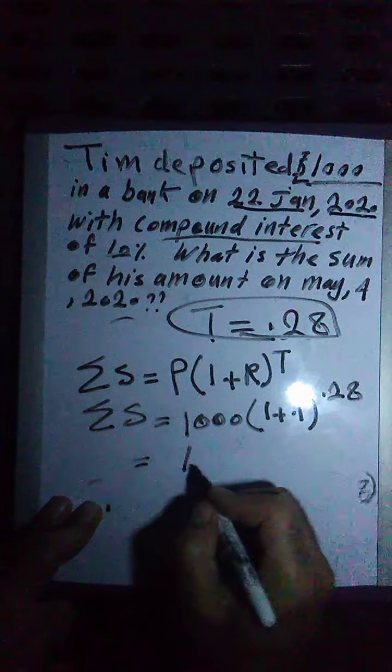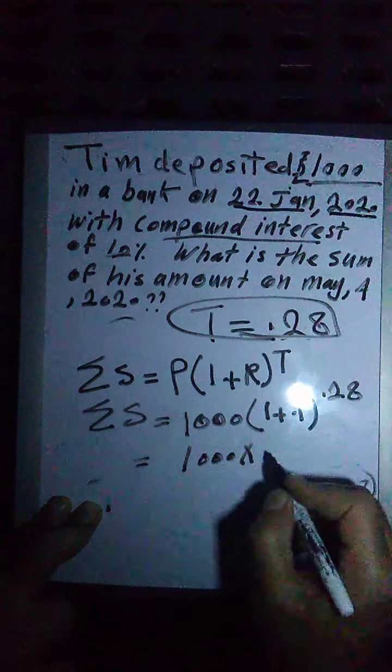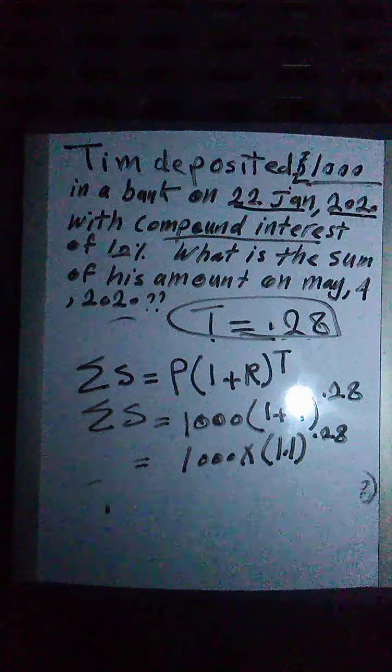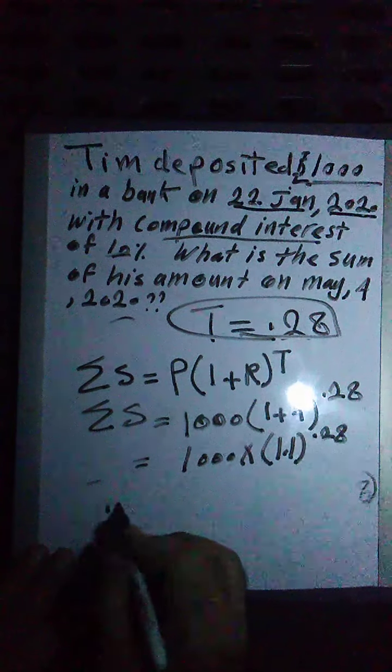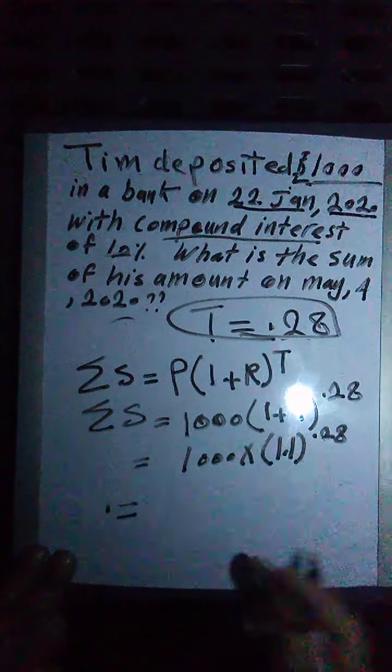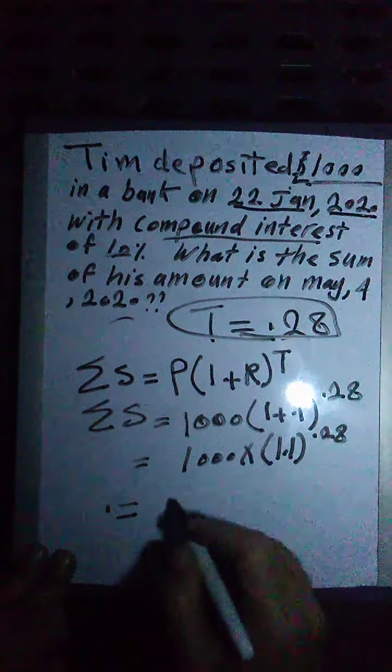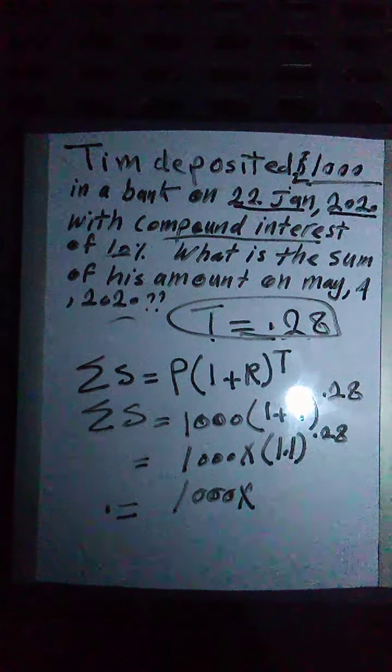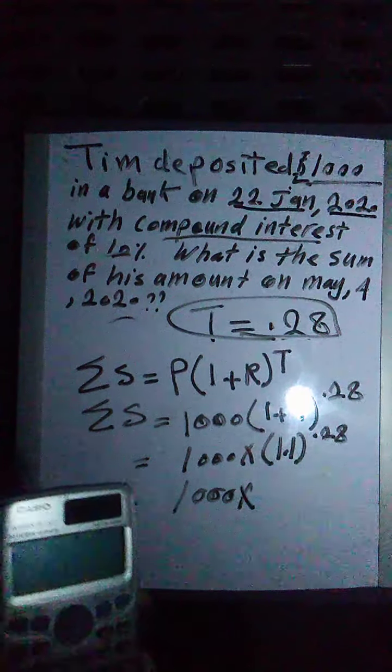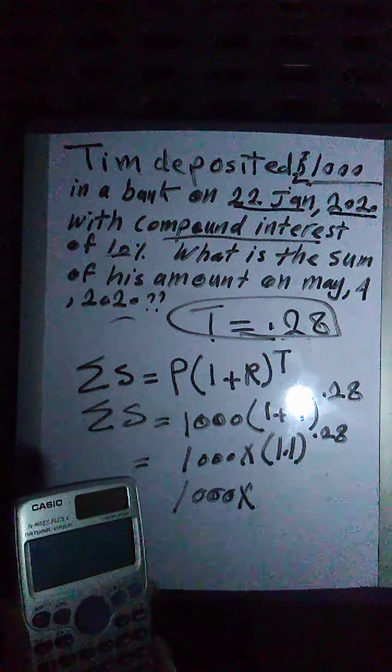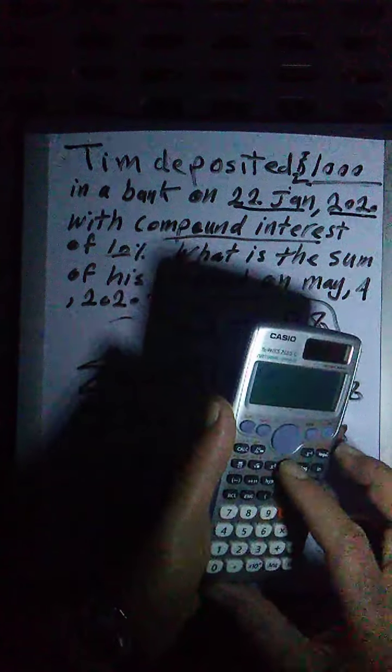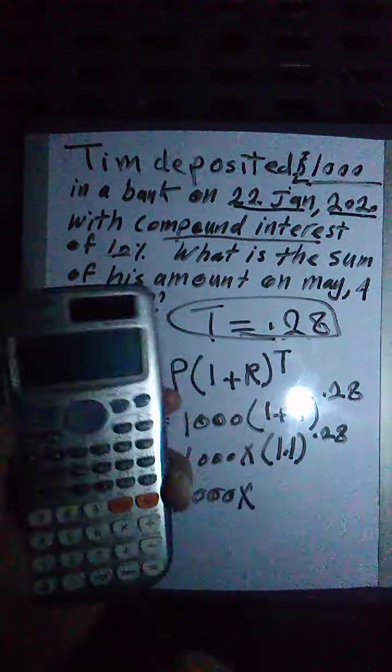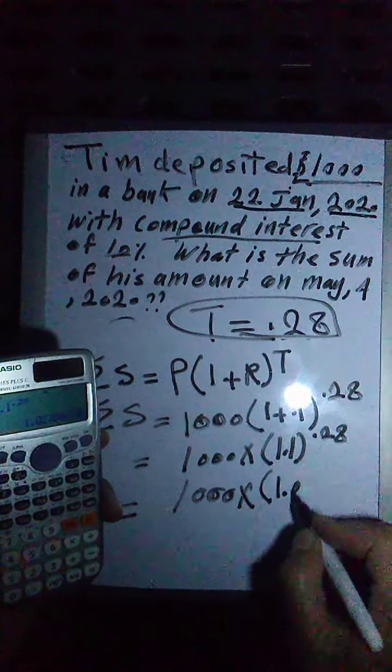Then this will be 1,000 multiplied by 1.1 power 0.28. See, I'm doing it step by step for you, just to know how we get it. Now I will keep the 1,000 aside. Then I will go to 1.1 power 0.28 and check out how it will be. 1.1 power 0.28. This one equals 1.027.